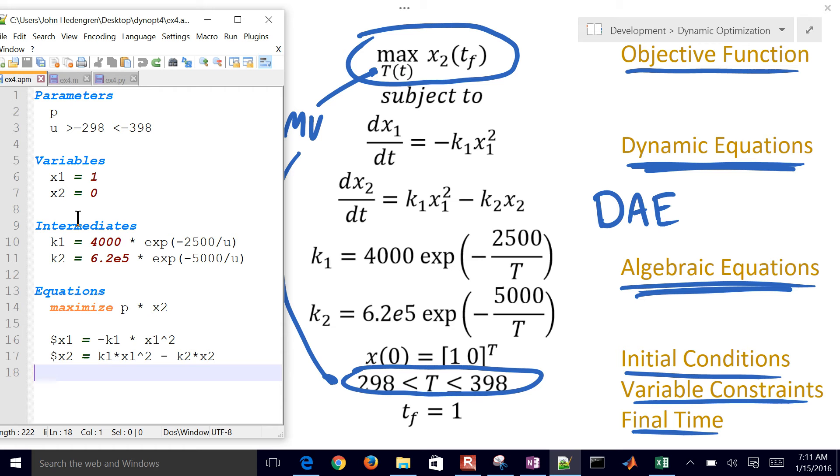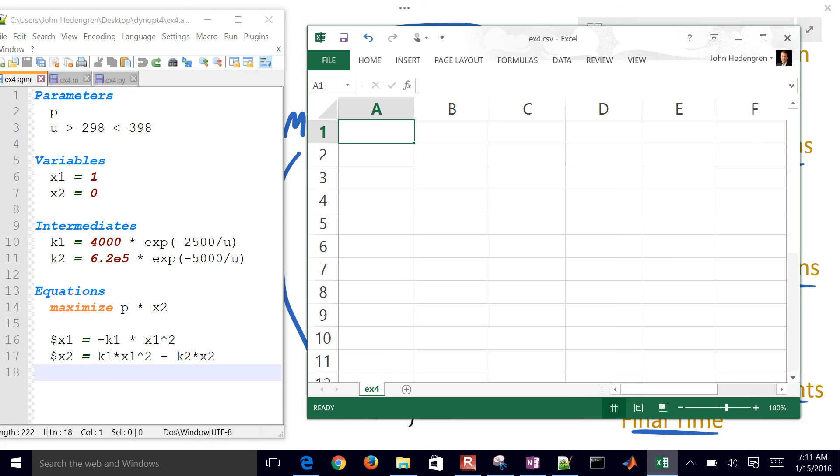Now the next thing I want to do is just create a data file. I need my time values I want to solve at, but also I want my P value as well in there.